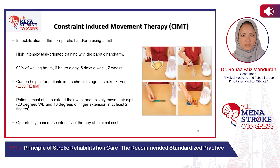Constraint-induced movement therapy (CIMT) focuses on immobilization of the non-paretic arm using a mitt, combined with high-intensity task-oriented training with the affected hand — 90% of waking hours, six hours a day, five days a week, for a total of two weeks. It can be helpful for patients in the chronic stage of stroke, more than one year post-stroke. The patient must be able to extend their wrist and actively move digits — 20 degrees of wrist extension and 10 degrees of finger extension in at least two fingers. It also offers an opportunity to increase intensity of therapy at minimal cost.